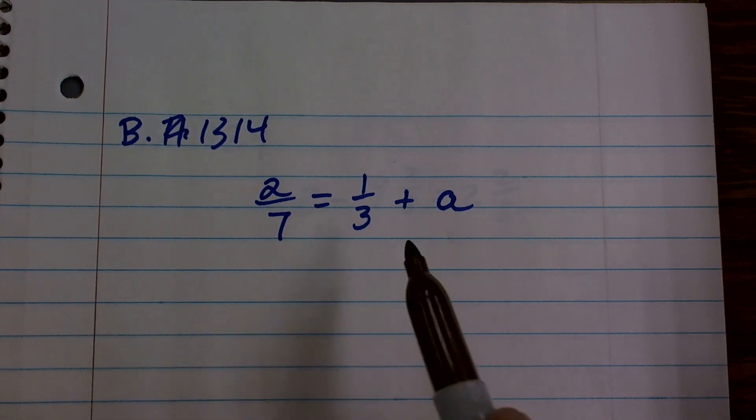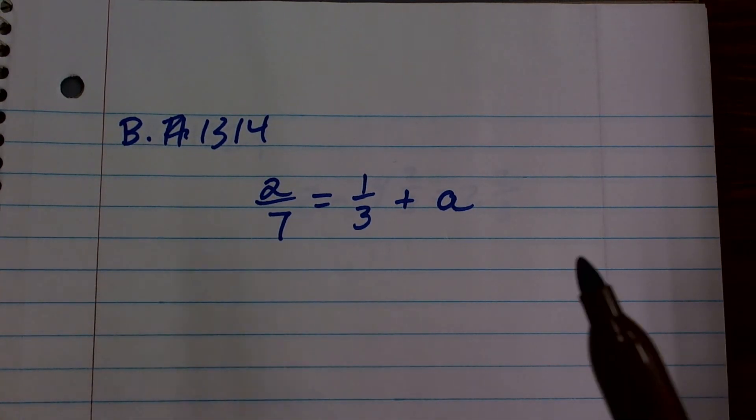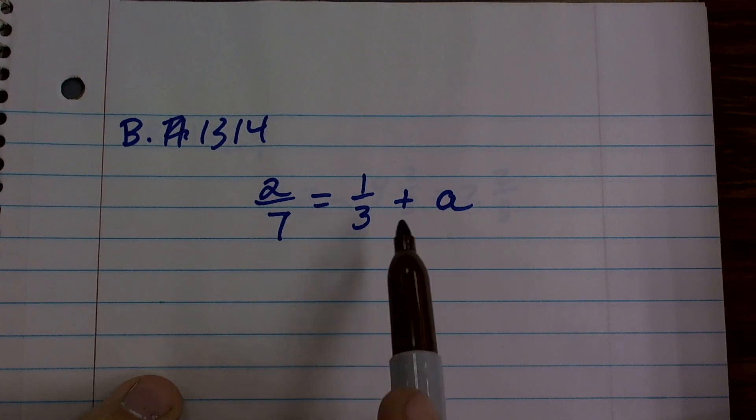It says 2/7 equals 1/3 plus a. Remember, we have to isolate the variable. We need to get this variable on by itself.